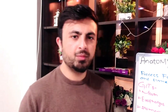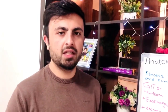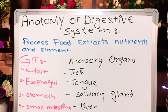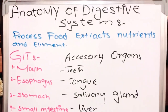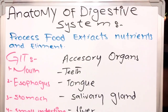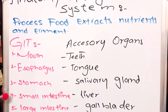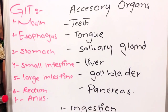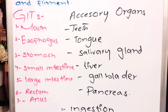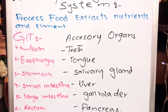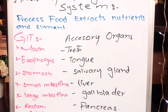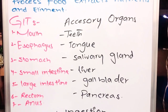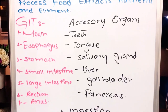The digestive system is the process of food in which the extraction of nutrients and the elimination of waste materials occurs. The GIT consists of mouth, esophagus, stomach, small intestine, large intestine, rectum, and anus. Our accessory organs include teeth, tongue, salivary glands, liver, gallbladder, and pancreas. Our accessory organs assist the food in digestion.